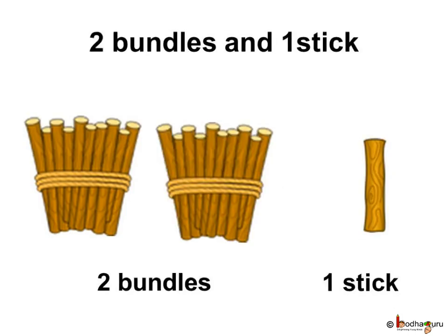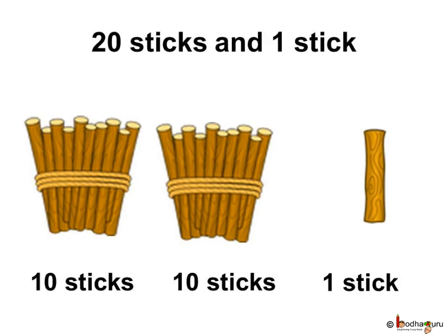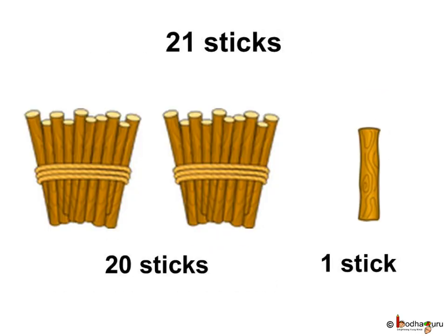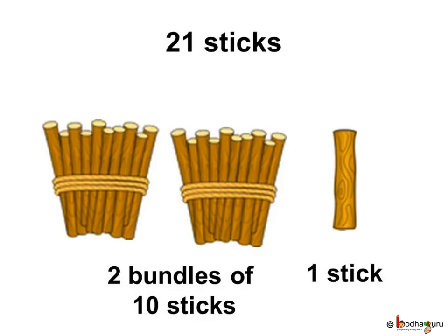What if there are two bundles and one loose stick? Well, as we already know, two bundles is 20 sticks. So, 20 sticks and one stick — 20 and one is called 21. It's 21. Thus, 21 sticks means two bundles of 10s and one.